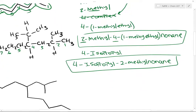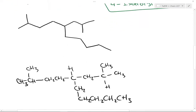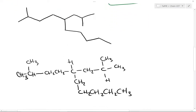Let's do a second example. Again we're going to look for the longest chain. The longest chain here is 1, 2, 3, 4, 5, 6, 7, 8, 9, 10 — 10 carbons for a decane. I'm going to start numbering at this end — 1, 2 — because I encounter a substituent right away at carbon 2. Then 3, 4, 5, 6, 7, 8, 9, and 10. So I have a complex substituent here at carbon 5.